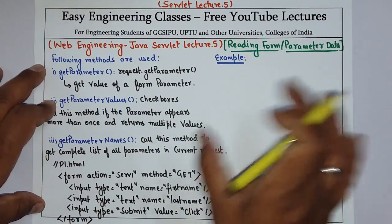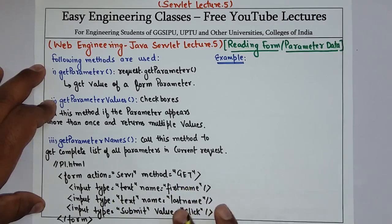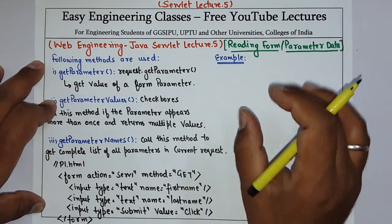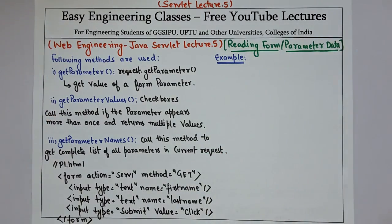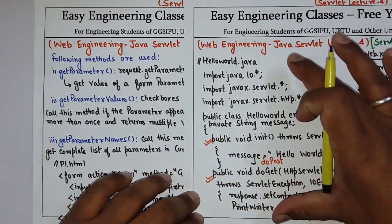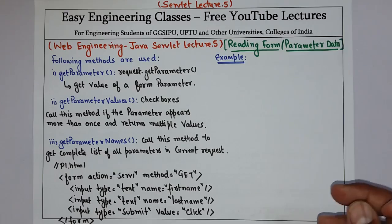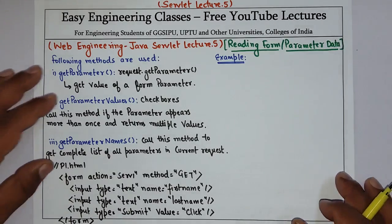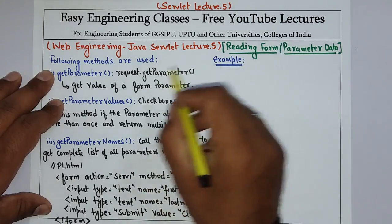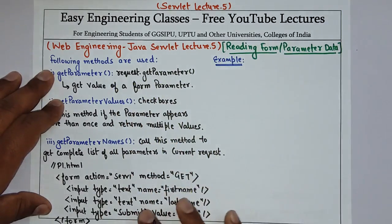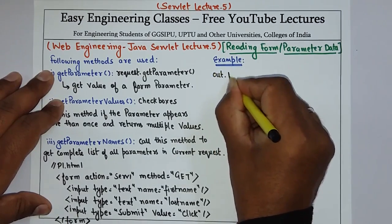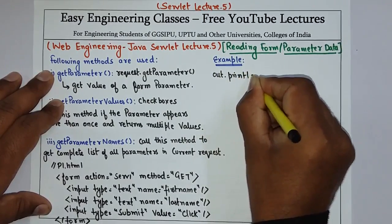Now let's see how you can fetch the values of these text fields in the servlet code. I am not going to write the entire code up to the method declaration because in any servlet code that part is the same — you can refer to the previous video lecture. After that, use request.getParameter to fetch the values, and I am writing directly from out.println to display the values on the servlet.